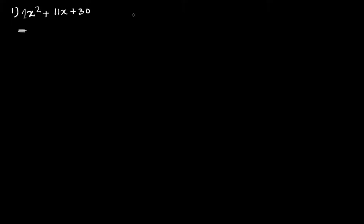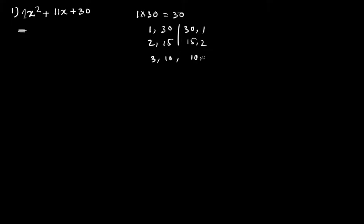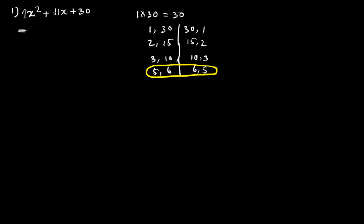So the first question is x² + 11x + 30. We have 1 × 30, so let's write down the factors of 30: 1 and 30, 2 and 15, 3 and 10, 4 and 5, 5 and 6. These are the 8 pairs of possible factors. By adding and subtracting the factors we should get 11, and I can see only 5 + 6 gives me 11.